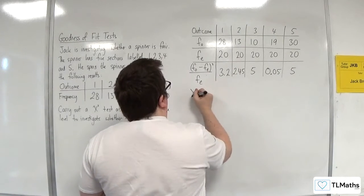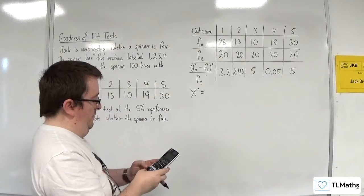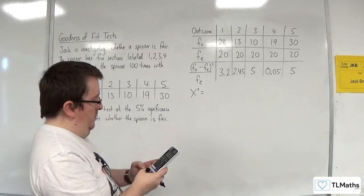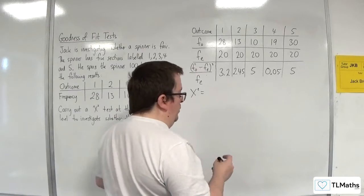The sum of those: 3.2 plus 2.45 plus 5 plus 0.05 plus 5, and we get 15.7.